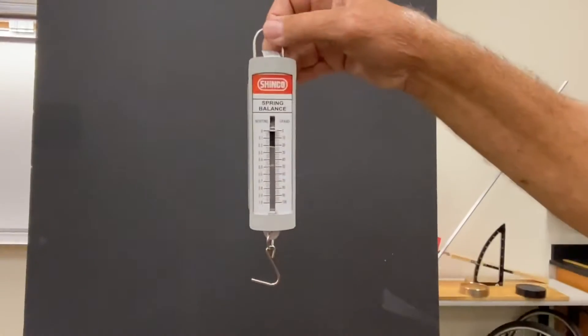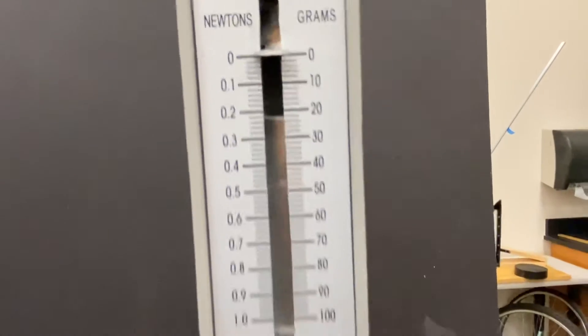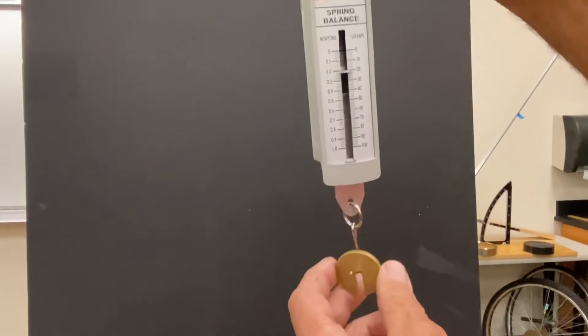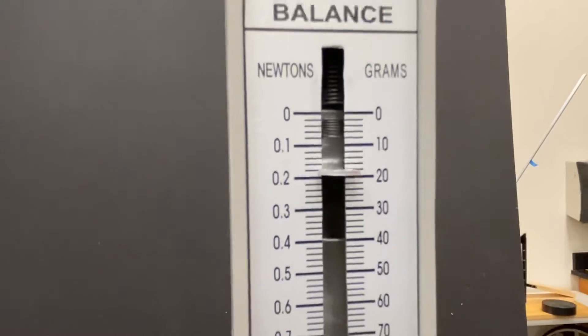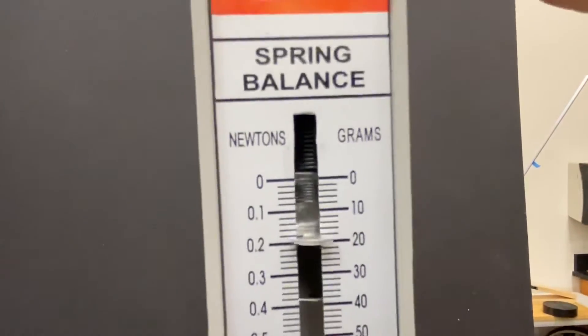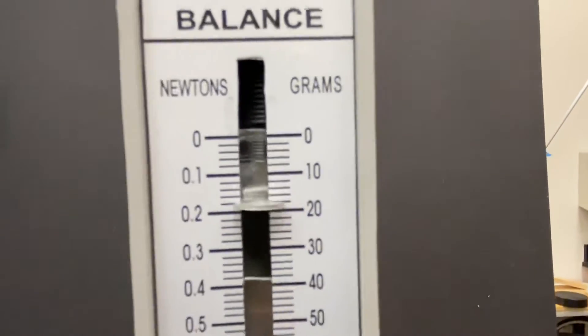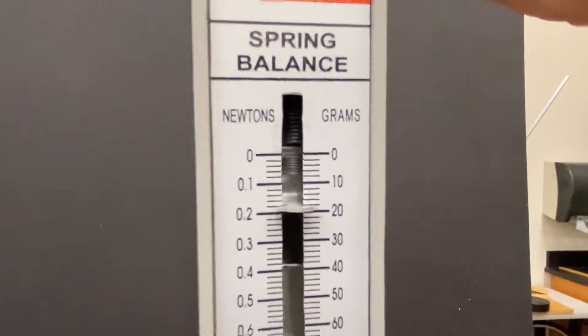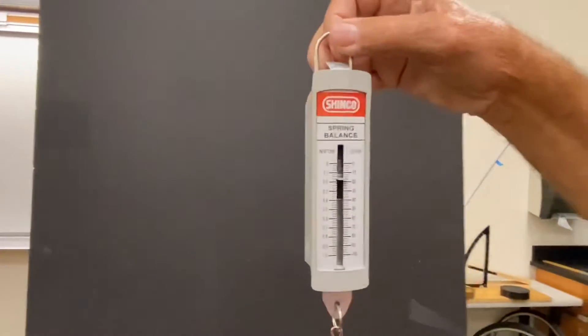Here we have another spring scale. This one measures both grams and newtons. We have it zeroed out and we're going to place this 20 gram mass on it again and see what it measures out to be. So it's wiggling a little bit at the 20 gram unit. And some of these can be tricky to scale at zero. So this one's showing us 20 grams and close to 0.2 newtons. There's a good derived unit you could get from the gram. See if you could get that 0.2 newtons in your calculations.